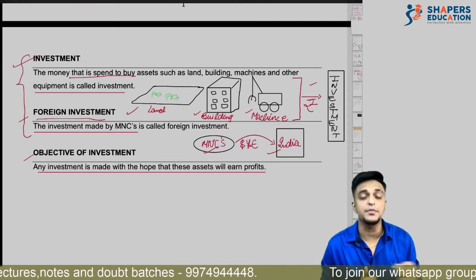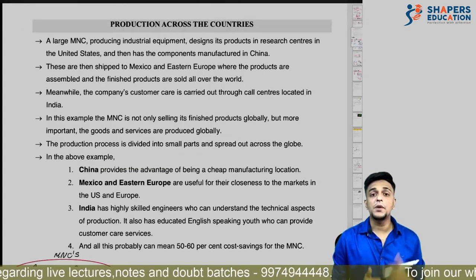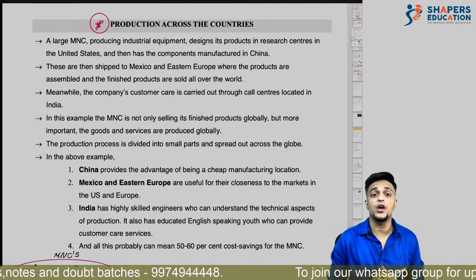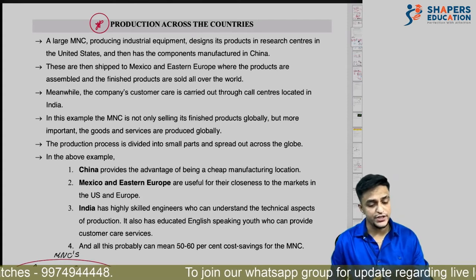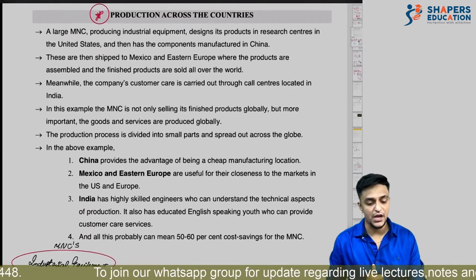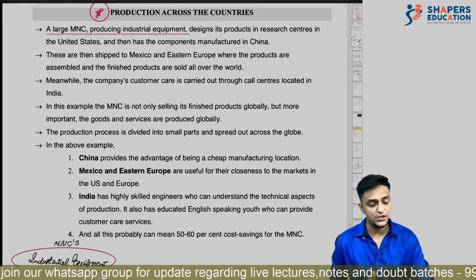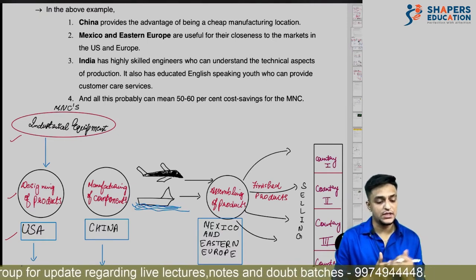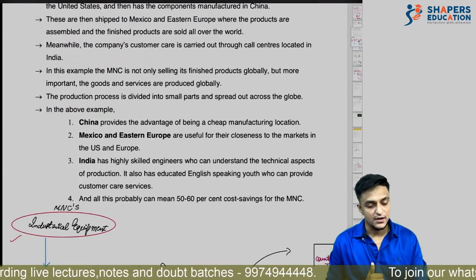Our next important topic is production across countries — how MNCs divide their production across different departments and countries. An MNC that manufactures industrial equipment designs its products in the USA.